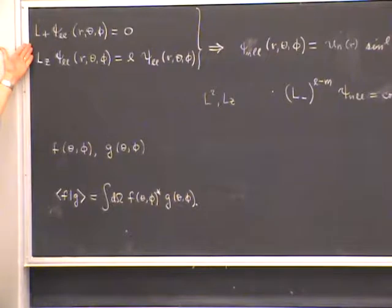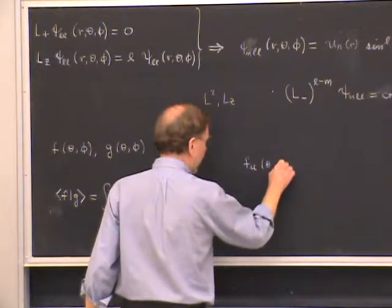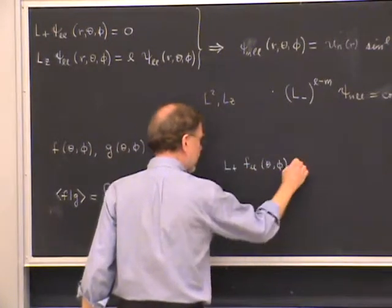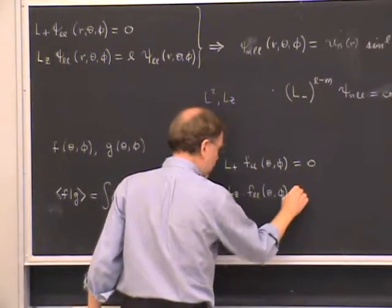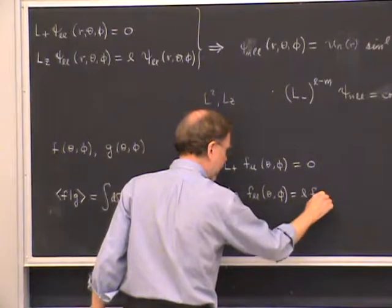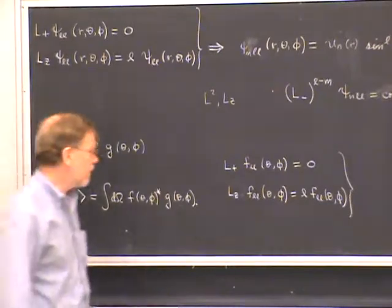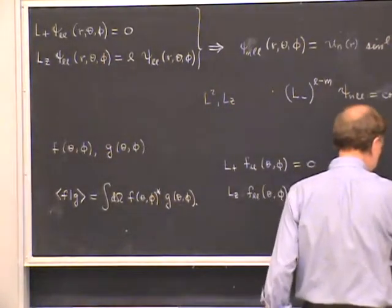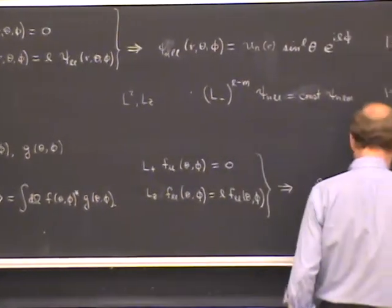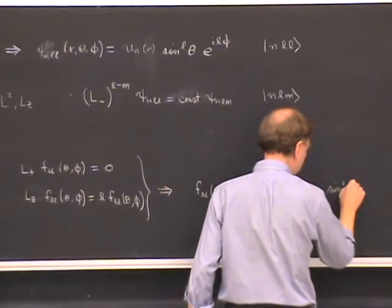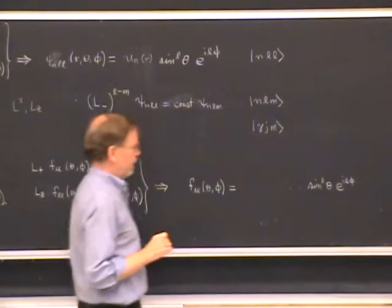The equations are the same as before, except now calling it F_LL, where the stretch state is a function of theta and phi. It will first be annihilated by L+, and second, applying Lz gives a factor of L times F_LL(theta, phi). It's the same problem as before, except there's no radial coordinate. The solution is that F_LL(theta, phi) equals sine^L(theta) times e^(iL*phi), same calculation as before.